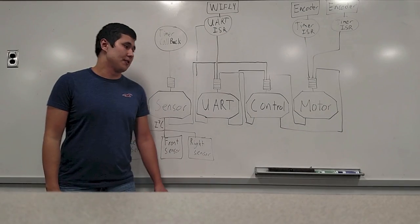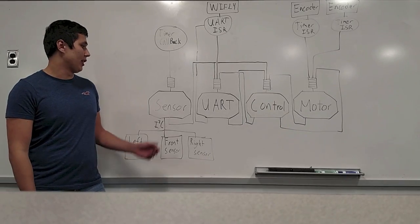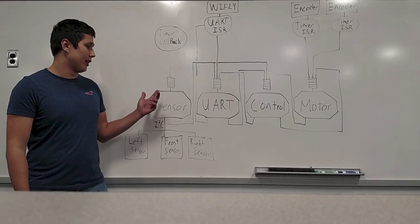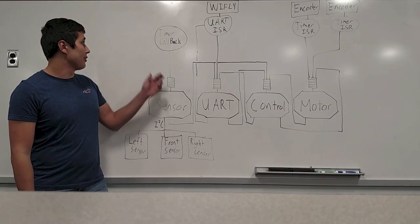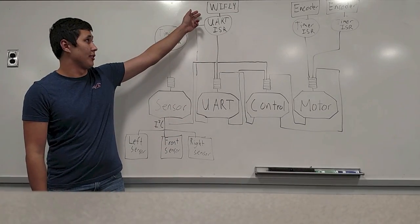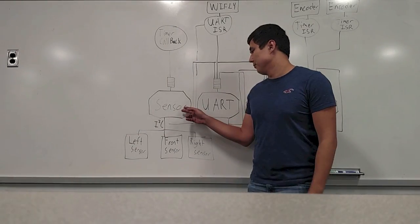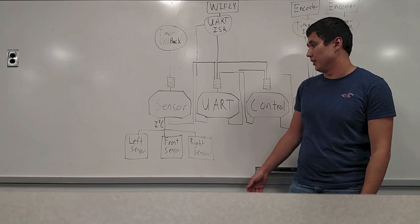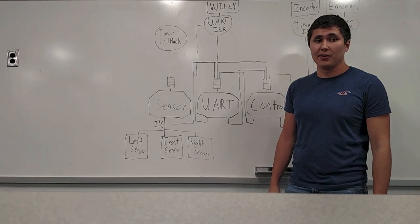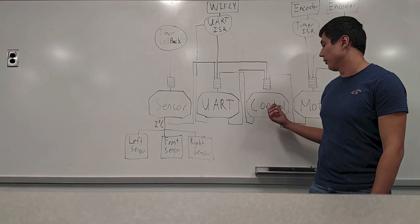So our rover has four main threads. Each thread has its own message queue through which other threads or ISRs can communicate to that particular thread. On our state diagram, circles are the ISRs and rectangles are the actual hardware. The first thread in our system is the sensor thread. It takes care of all the sensor readings and sensor data. The thread is activated through a timer. The timer can be started and stopped in the control thread.